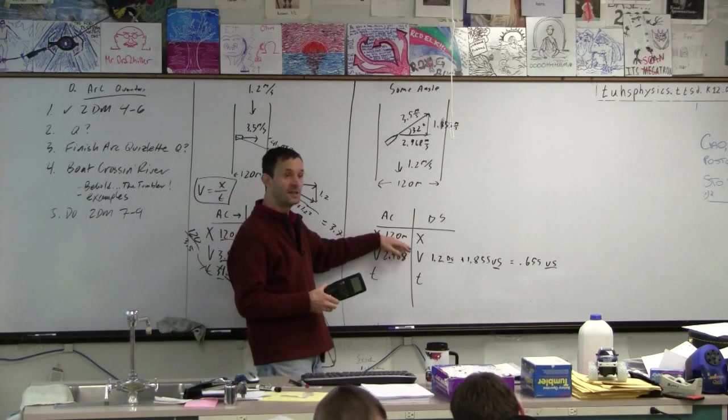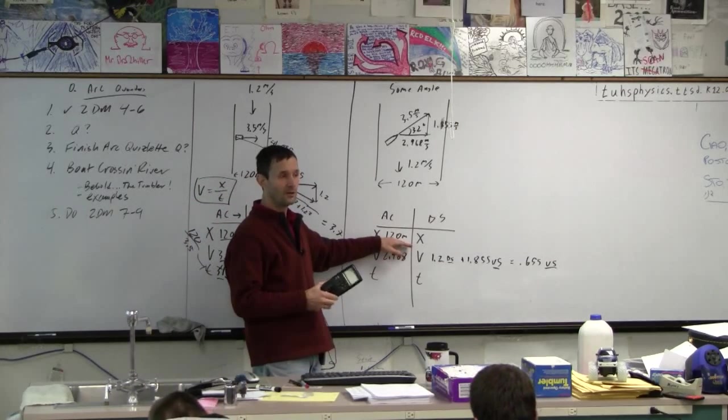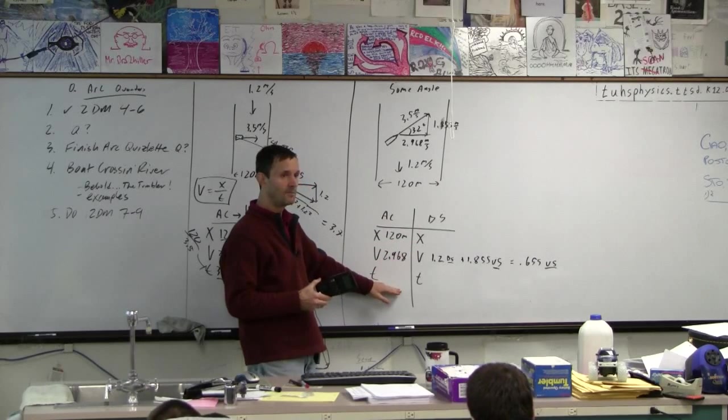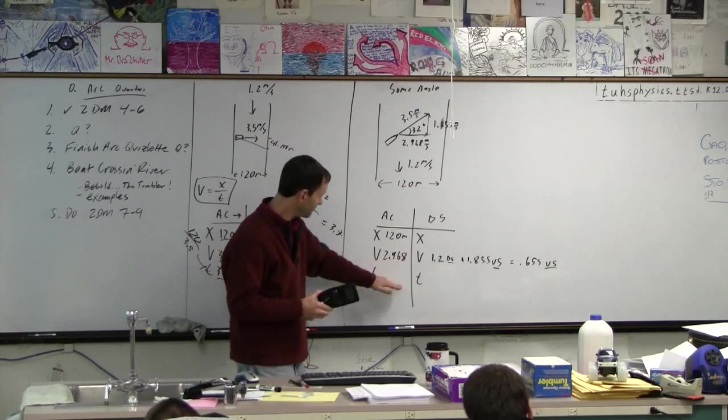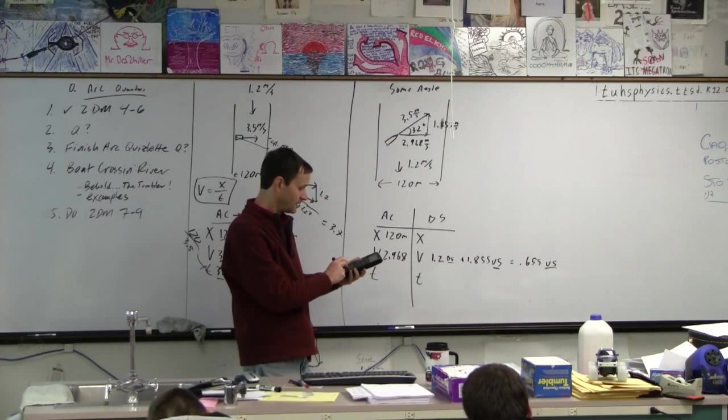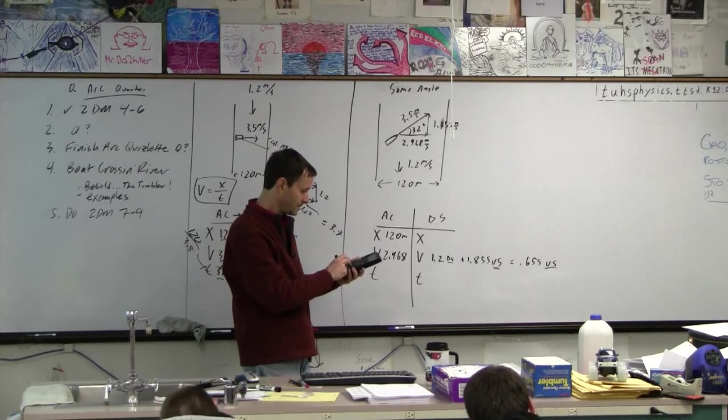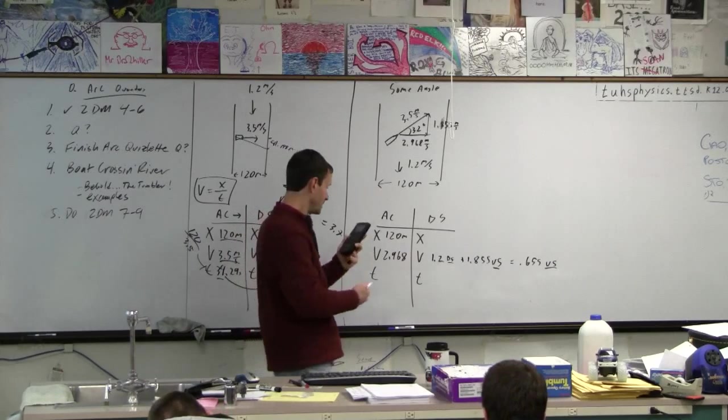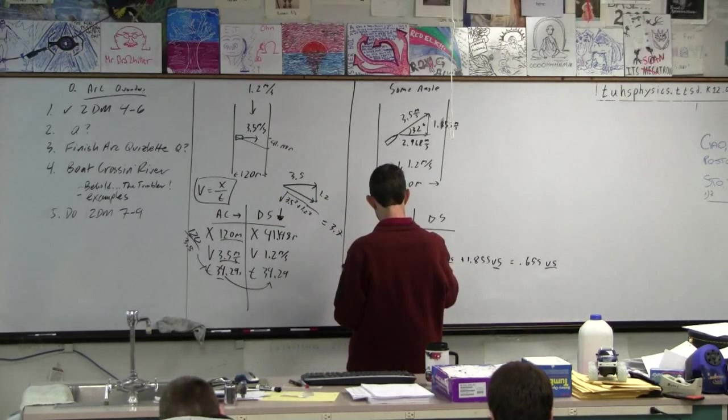Okay? Now what do we do? We do the same thing we did before. We've done all the tricky vector stuff. What do we do with this and this? Do we just divide to get the time? Yeah, so this divided by this will give us time. So take your calculator. Divide 120 by 2.968. 40.43.11. All right. Thank you.